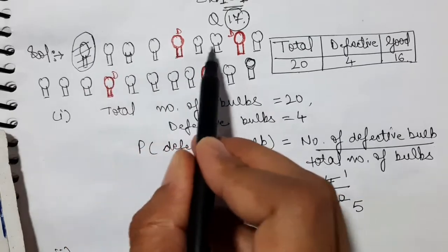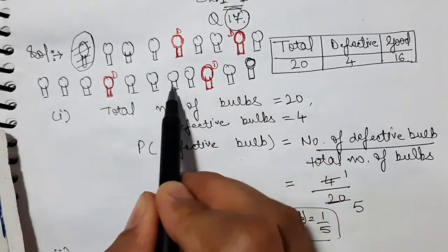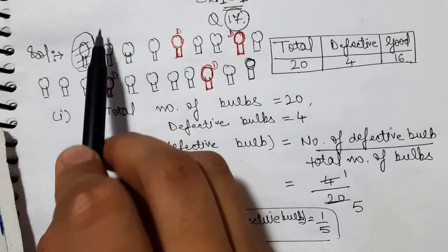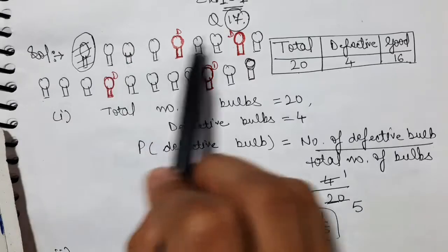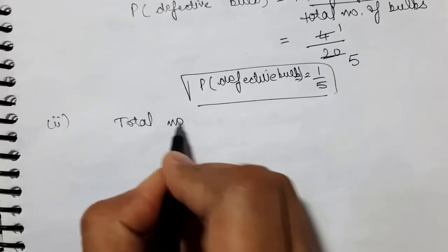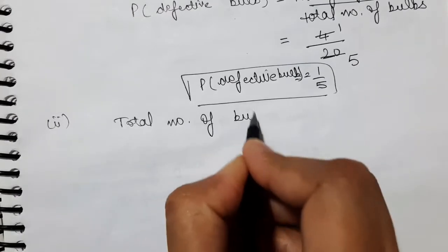1, 2, 3, 4, 5, 6, 7, 8, 9, 10, 11, 12, 13, 14, 15, 16, 17, 18, 19. Total 20, we have removed the bulb which was good. And the rest of it is 19. So now we will write here total number of bulbs. Total number of bulbs now.